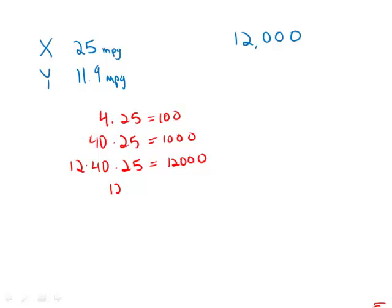And so what this means, very simple analysis, that 12 times 40 must equal 12,000 divided by 25, or in other words, 480 equals 12,000 divided by 25.